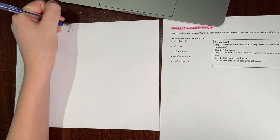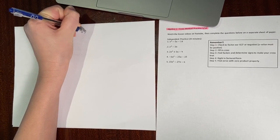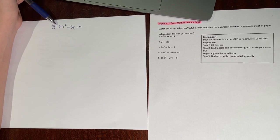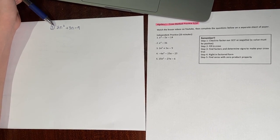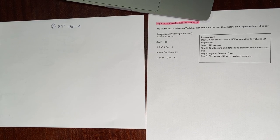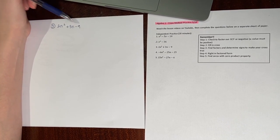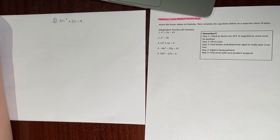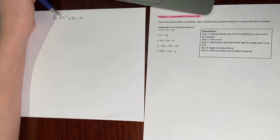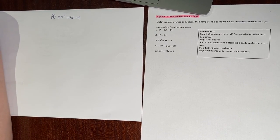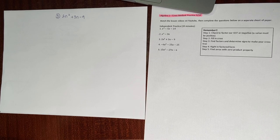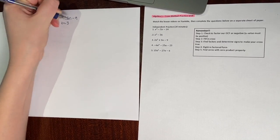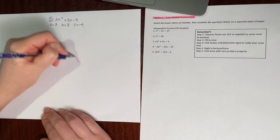Number 3: we have 2n squared plus 3n minus 9. My a value is bigger than 1, so I first check for a GCF. Do 2, 3, and negative 9 share any number by division? 3 is not divisible by 2, and 9 is not divisible by 2, so there's no GCF. We label: a is 2, b is 3, c is negative 9. Fill in the cross.